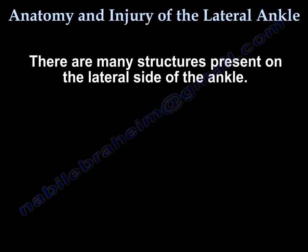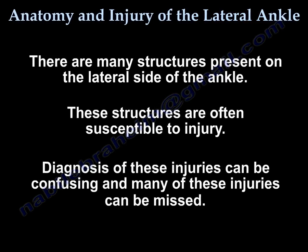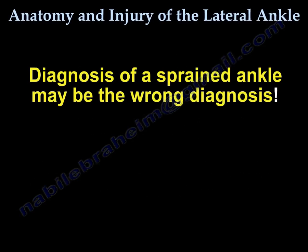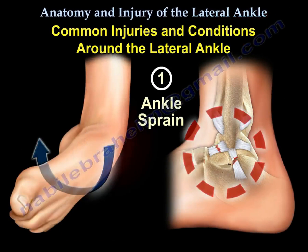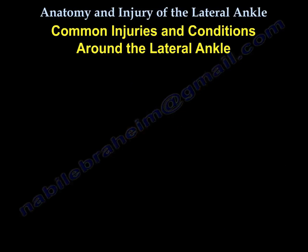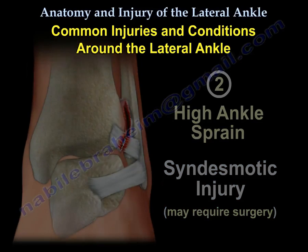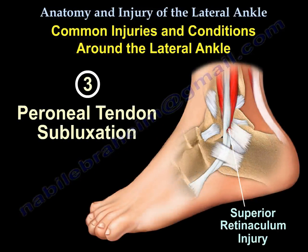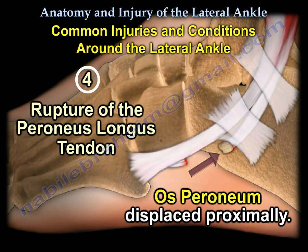There are many structures on the lateral side of the ankle that are often susceptible to injury. Diagnosis of these injuries can be confusing and many can be missed — a diagnosis of a sprained ankle may be incorrect. Common lateral ankle conditions include: ankle sprain, high ankle sprain or syndesmotic injury (which may require surgery), peroneal tendon subluxation with superior retinaculum injury, and rupture of the peroneus longus tendon with proximal displacement of the os peroneum.